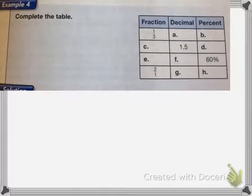Completing the table. We have one-third. I need to write that as a decimal. So it'll be 1 divided by 3, and I end up with 0.3 repeating.